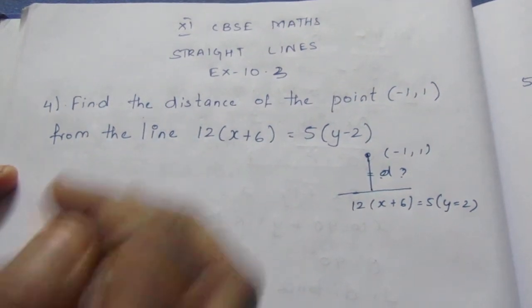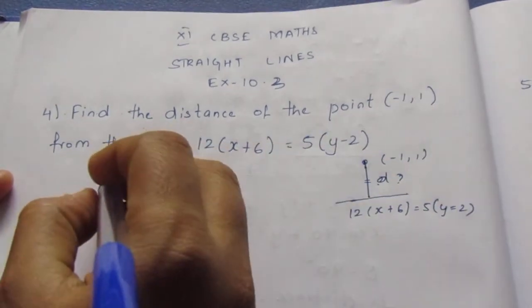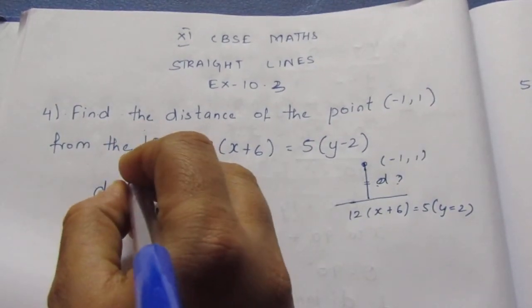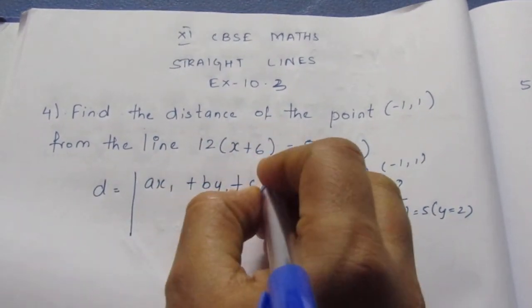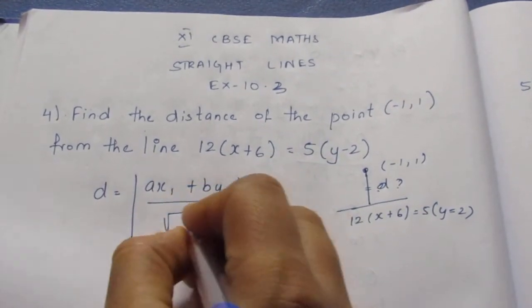Now, that is an equation for, that is a formula for it to solve. Distance is equal to Ax₁ plus by₁ plus c by root of a² plus b².